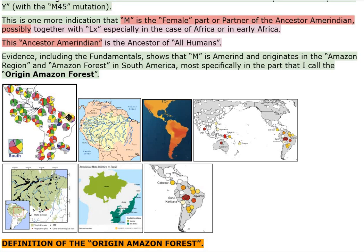This ancestor Amerindian is the ancestor of all humans. Evidence, including the fundamentals, shows that M is Amerind and originates in the Amazon region and Amazon forest in South America, most specifically in the part that I call the origin Amazon forest.